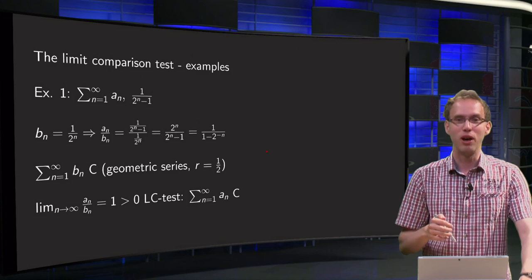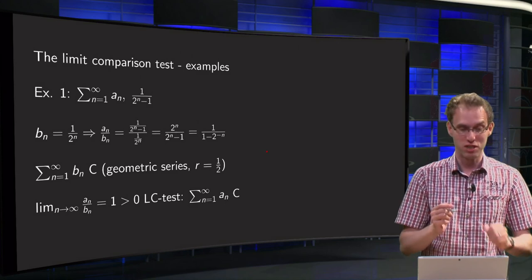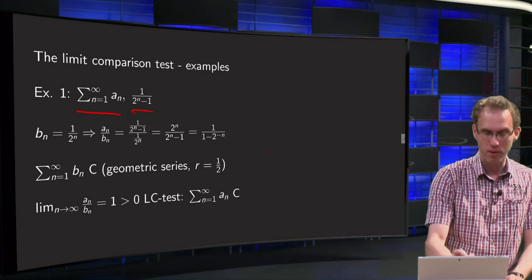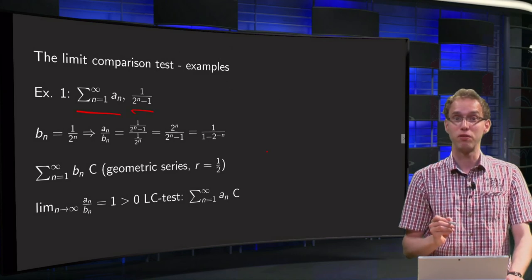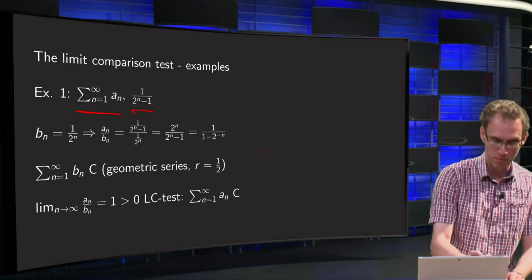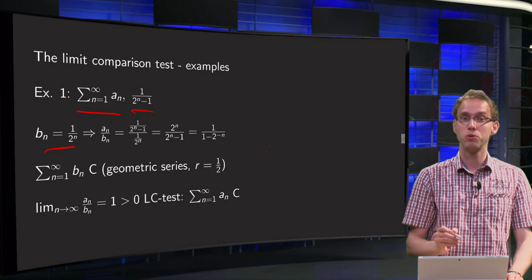Well, let's first do a series where the limit comparison test works nicely. We have the sum n from 1 to infinity of an, where in this example an equals 1 over 2 to the power n minus 1. And we say, well, let's use as our bn 1 over 2 to the power n.